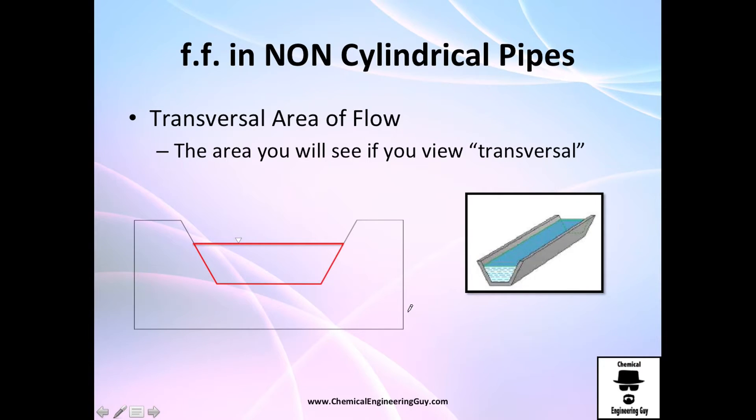That's the wetted perimeter, and the transversal area of flow is literally the area you will see if you were to cut this and watch it from here, you are here and you watch this. What's the transversal area? This, this, this, this, this is the area of flow.